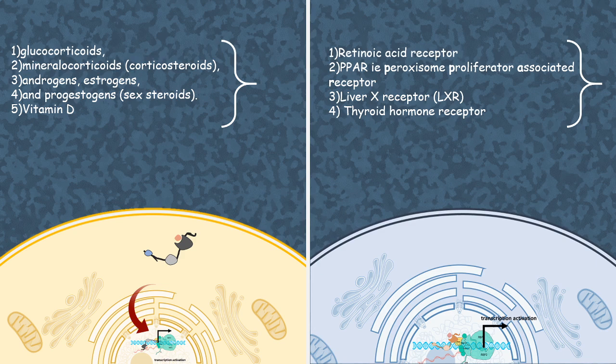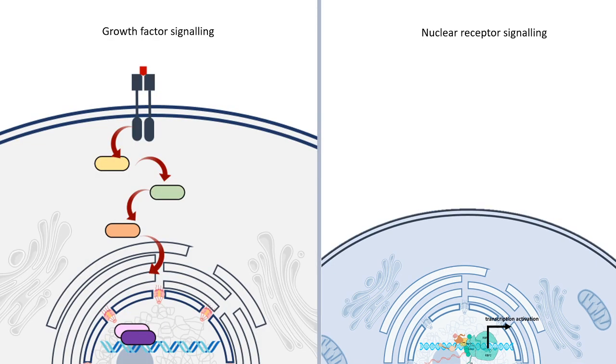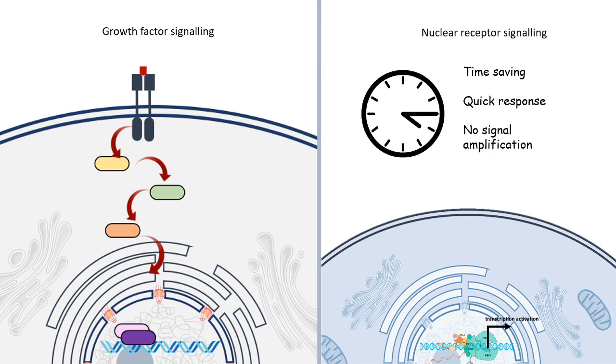Now what we wanted to tell you is that the growth factor signaling pathways, which are generally MAP kinase pathway or PI3K-AKT pathway, those signaling pathways have several steps, several kinases associated with it. So the advantage is you can modulate that pathway at several levels. But here the nuclear receptor signaling is time-saving, it's for quick responses, but the downside of it is it doesn't have a property of signal amplification.